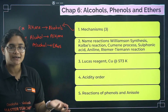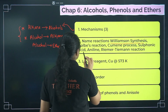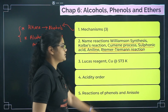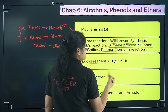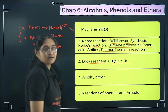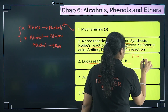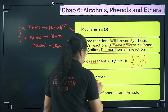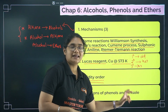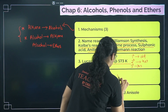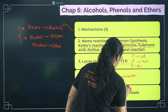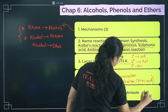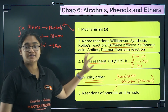Name reactions to prepare: Williamson ether synthesis, Cole's reaction, cumene process, sulfonic acid preparation, and Reimer-Tiemann reaction. Also learn what Lucas reagent is and how it is used to distinguish alcohols. Reaction of copper at 573 K: primary alcohol gives aldehyde, secondary gives ketone, tertiary does not react. Also prepare acidity order for alcohols, reactions of phenols — especially bromination and nitration — and when concentrated nitric acid is used, picric acid is formed.